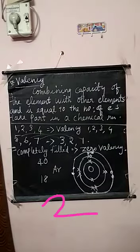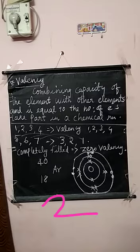Next is valence electrons. So, valence shell, valence electrons, and valency. First, what is valence shell? The outermost shell of an atom is called valence shell. In the last example, the shells were K, L, M, N — we filled M with 8, then 2 in N shell, so N shell is the outermost shell.